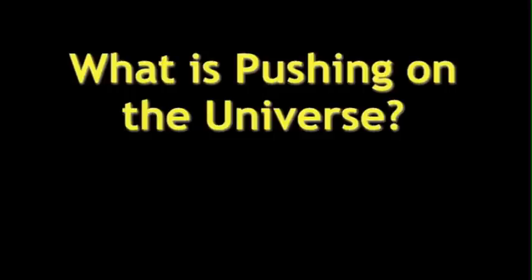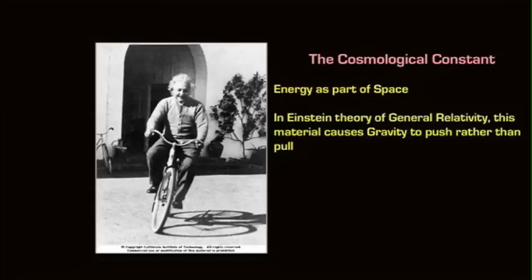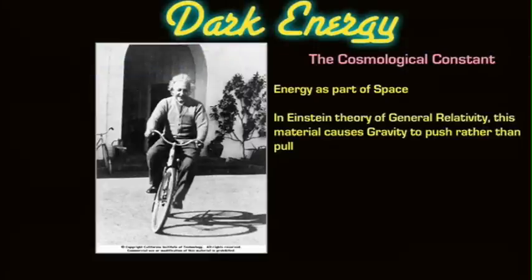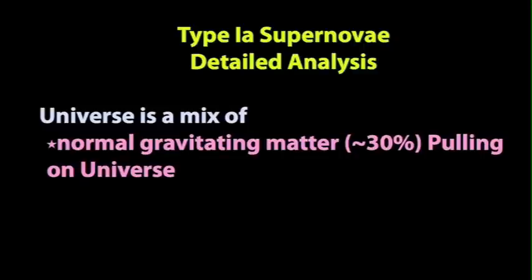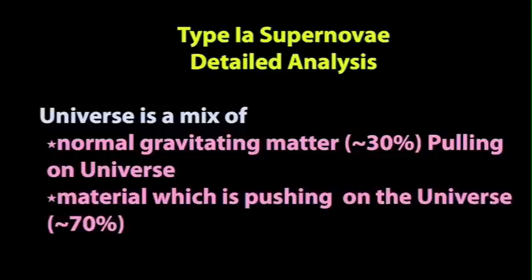So, what would be causing the universe to speed up? Well, we only have to look to Einstein, to that thing, the cosmological constant he invented. Energy as part of space fits the bill. And we generically call that stuff dark energy now. So, needless to say, if you go through and look at our results, we can go through and do a detailed analysis. And we find that in order to understand these exploding stars we see, we need a universe that's 30% stuff that pulls, and 70% of stuff that pushes.